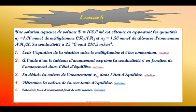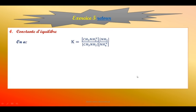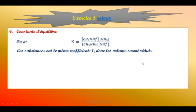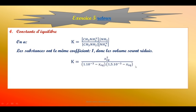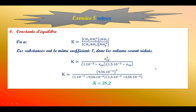Question 4 : déterminer la valeur de la constante d'équilibre. On prend les concentrations à l'équilibre. Toutes les substances ont le même coefficient 1, donc les volumes se réduisent. En fin de compte, on a X_éq divisé par les quantités de matière des réactifs. On convertit les millimoles en mol et on trouve K = 38,2.